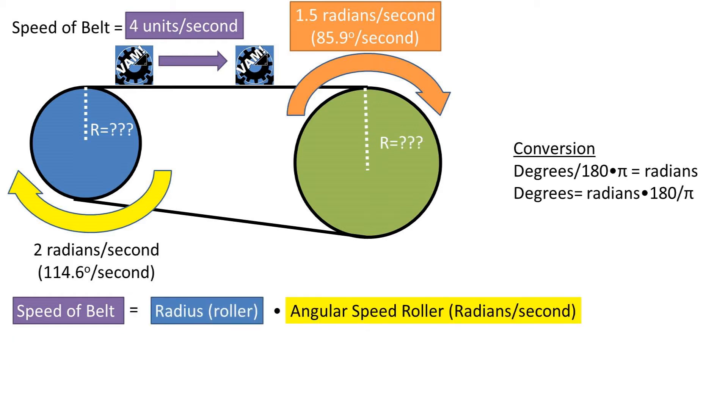To finish off this problem, let's solve for the radii of the rollers given the angular speeds listed and the speed of the belt, which is now 4 units per second. We will once again use the formula for the speed of the belt equation.